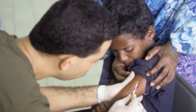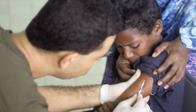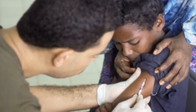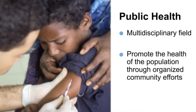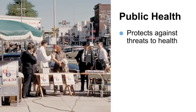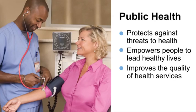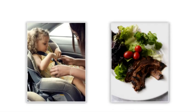Next, we will learn about how epidemiology fits into public health. For example, epidemiology has been used to evaluate the success of immunization programs, such as the one being implemented here in Mogadishu. Public health is a multidisciplinary field whose goal is to promote the health of the population through organized community efforts. Public health protects against threats to health, empowers people to lead healthy lives, improves the quality of health services, and prepares leaders to advance health. Now let's discuss two aspects of public health where epidemiology is used.